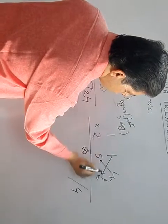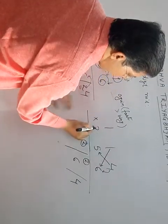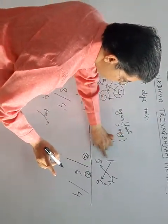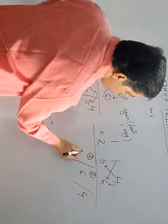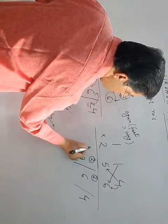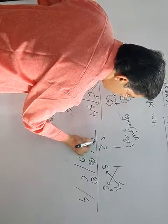Then, 1 times 6 is 6. 4 times 2 is 8. 8 plus 6 is 14. And 5 times 1 is 5. 14 plus 5, 19. I am taking 9. And carry over 1.